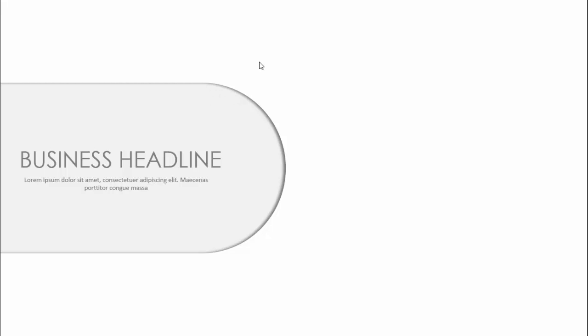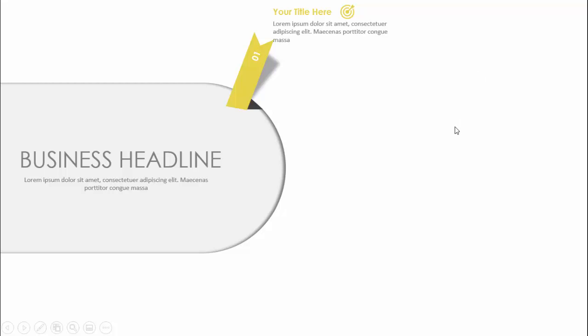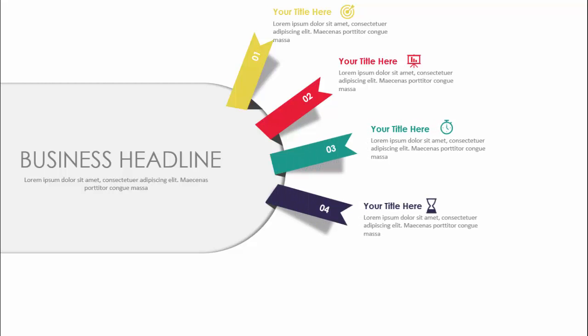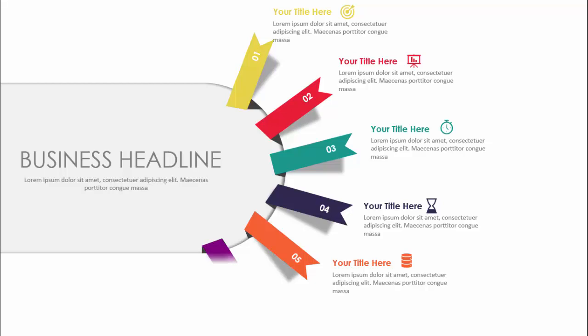In today's tutorial, I'm going to show you how to create a six-option animated infographic slide in PowerPoint. You can see I've added one shape with a business headline and detailed text. When I click, the first option comes in with a shadow effect — you can add a title, icon, and detailed text. On each next click, the subsequent options appear with different color combinations: option two, three, four, five, and six. I've created two slides — one with animation and one without.